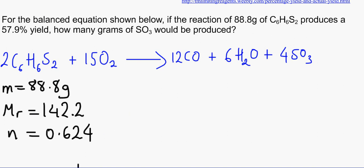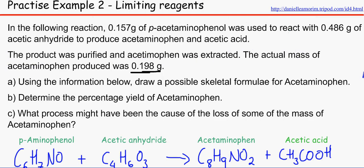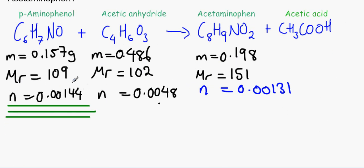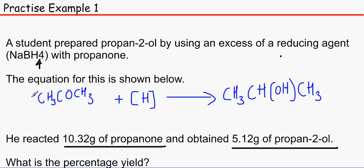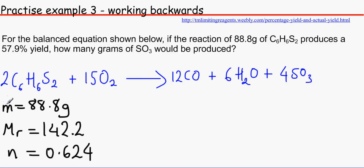Now the thing I forgot to point out in the other two questions is that the reason why we only use 0.00144 as our maximum is because the stoichiometric relationship between them is one to one. So for every mole of P-aminophenol reacted, we get one mole of acetaminophen. Same thing here where we have one mole of propanone, we would end up with one mole of propan-2-ol. This one is different.